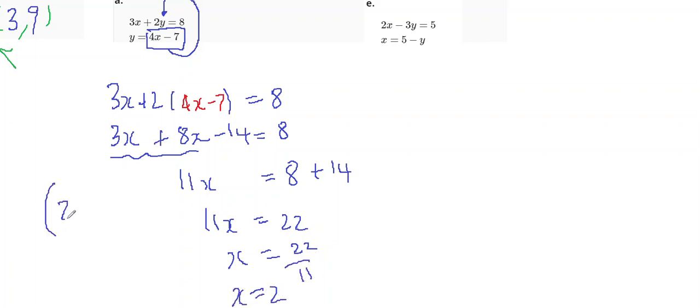So, half of my answer is 2. The other half of the answer is 4 times 2 minus 7. 8 minus 7. 1. So, my solution is x equals 2 and y equals 1.